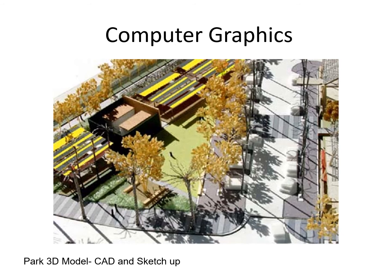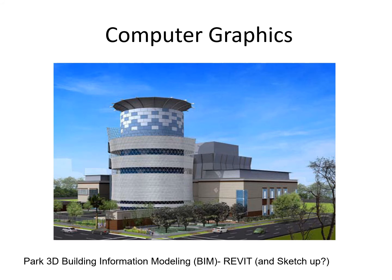Current day building information modeling like Revit or Civil 3D are primarily being used at the professional level for 3D renderings, because every team member builds their model and then they merge all models together and run clash checks. The program might identify if pipes are going through a structural beam, so a lot of problems can be resolved before the project is actually built. That's why many municipalities and agencies are requiring teams to work in building information modeling.